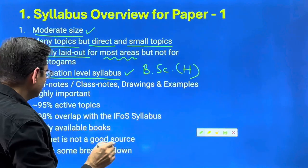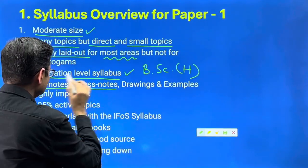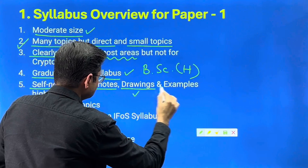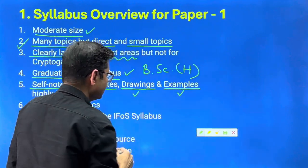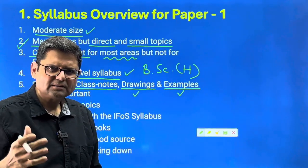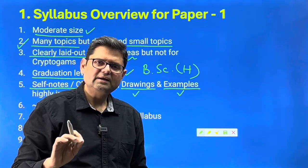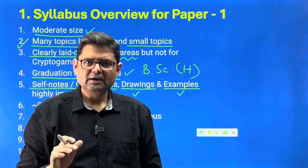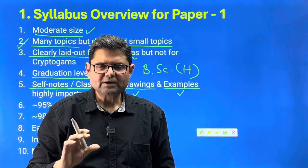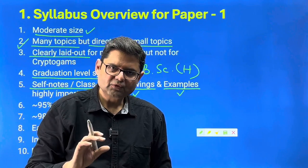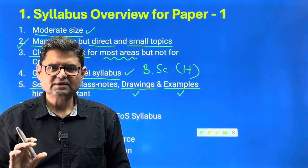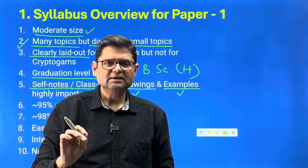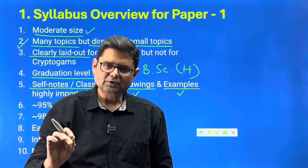Making self-notes or class notes is essential. Making important structural drawings and supporting economic importance, ecological distribution and similar things with proper examples is highly essential to score well. When reading from books or attending classes and making notes, always be very particular about drawing all necessary figures and retaining all necessary examples. Even one or two examples each will be more than adequate and will give you a very good score.